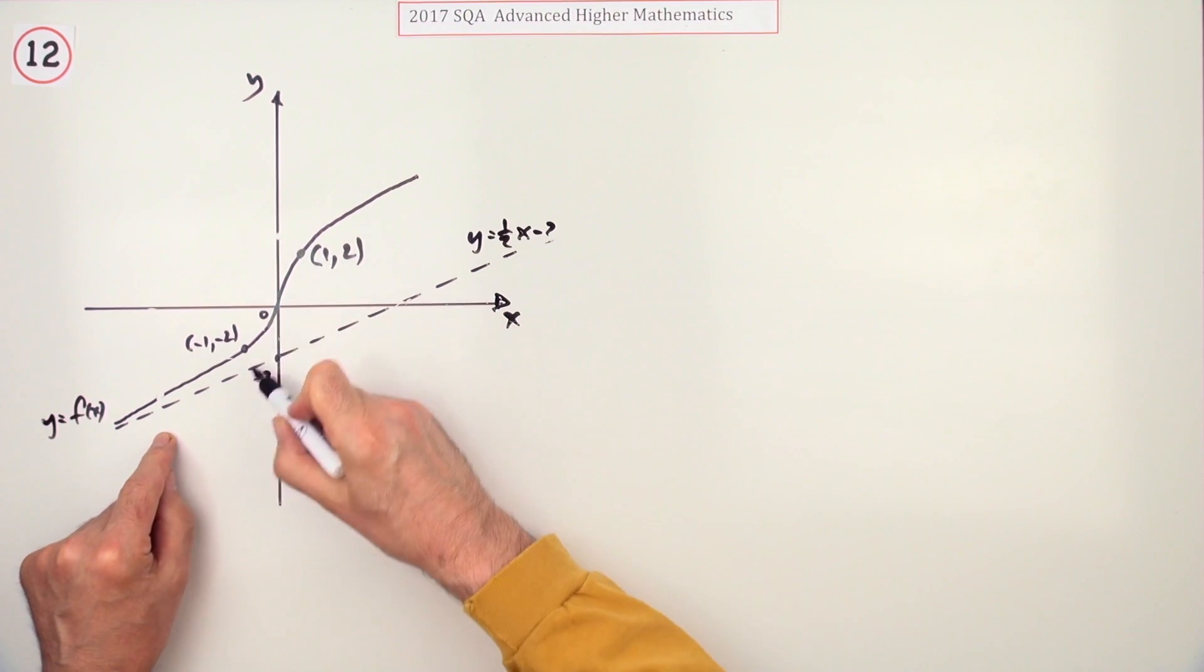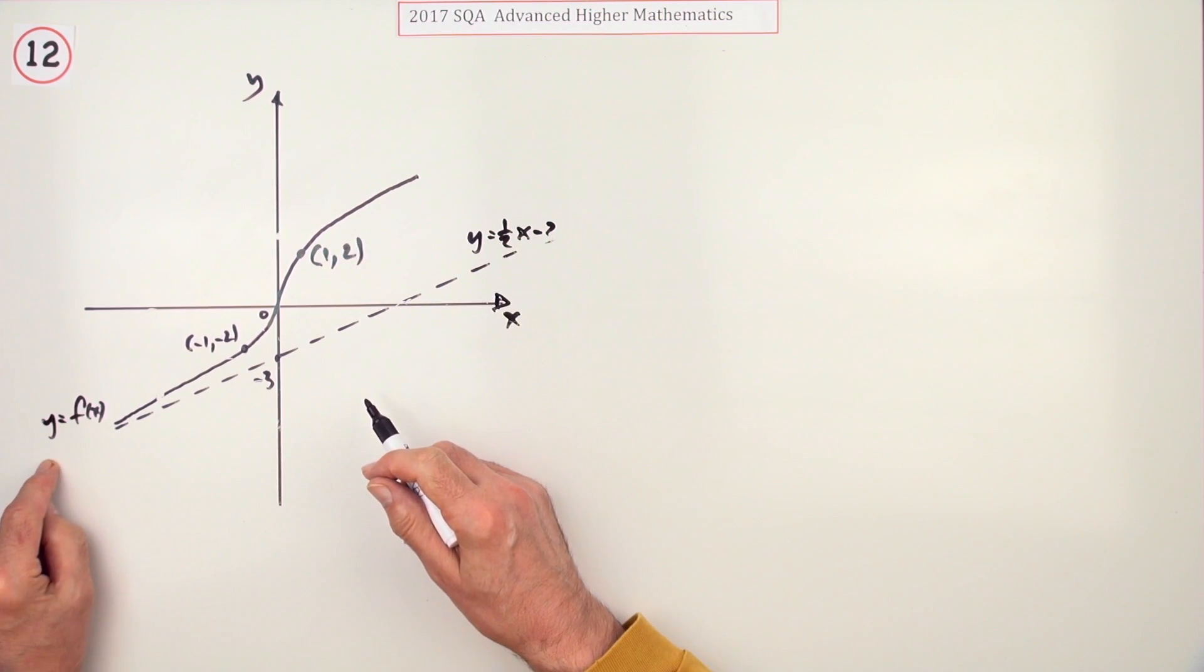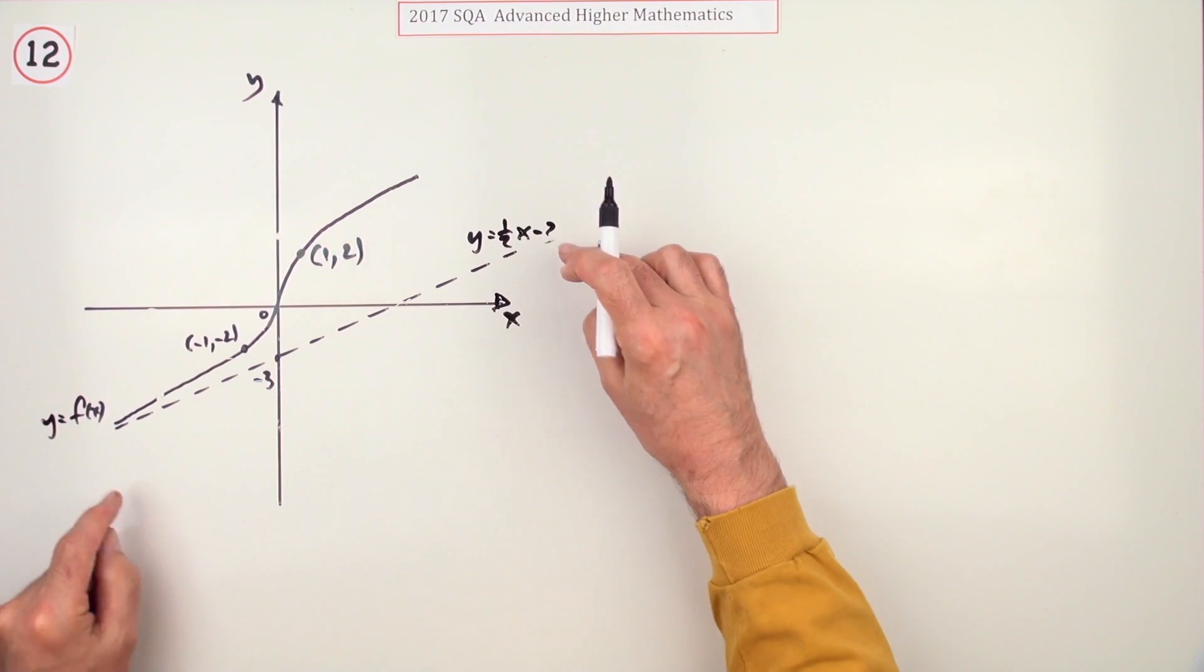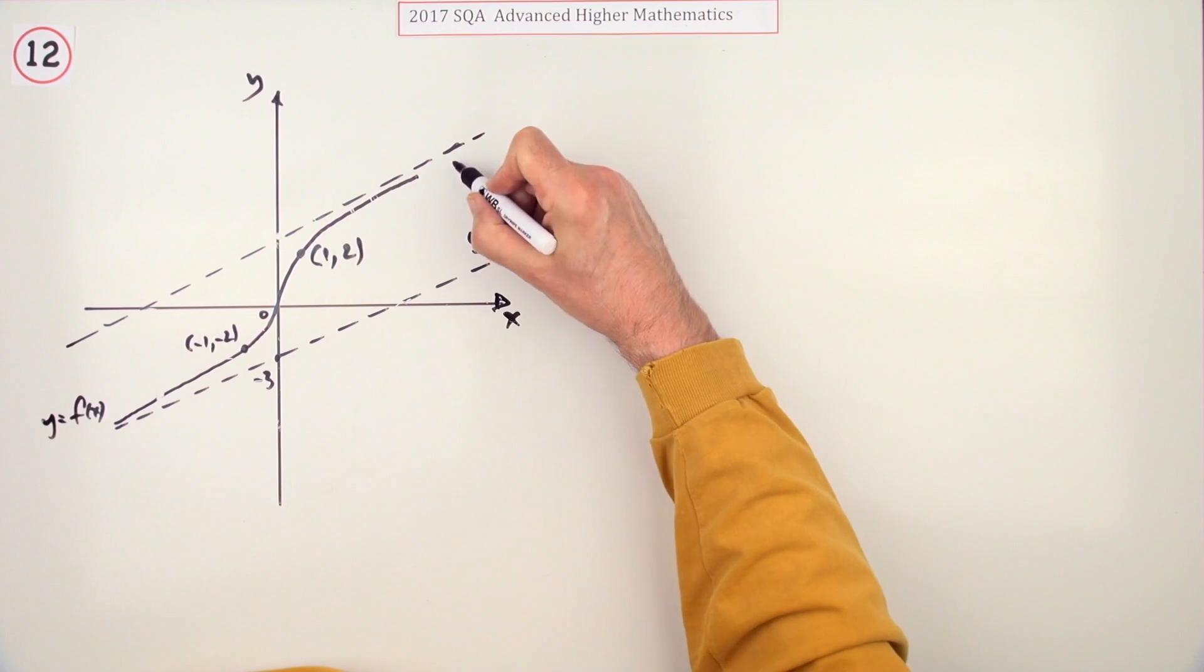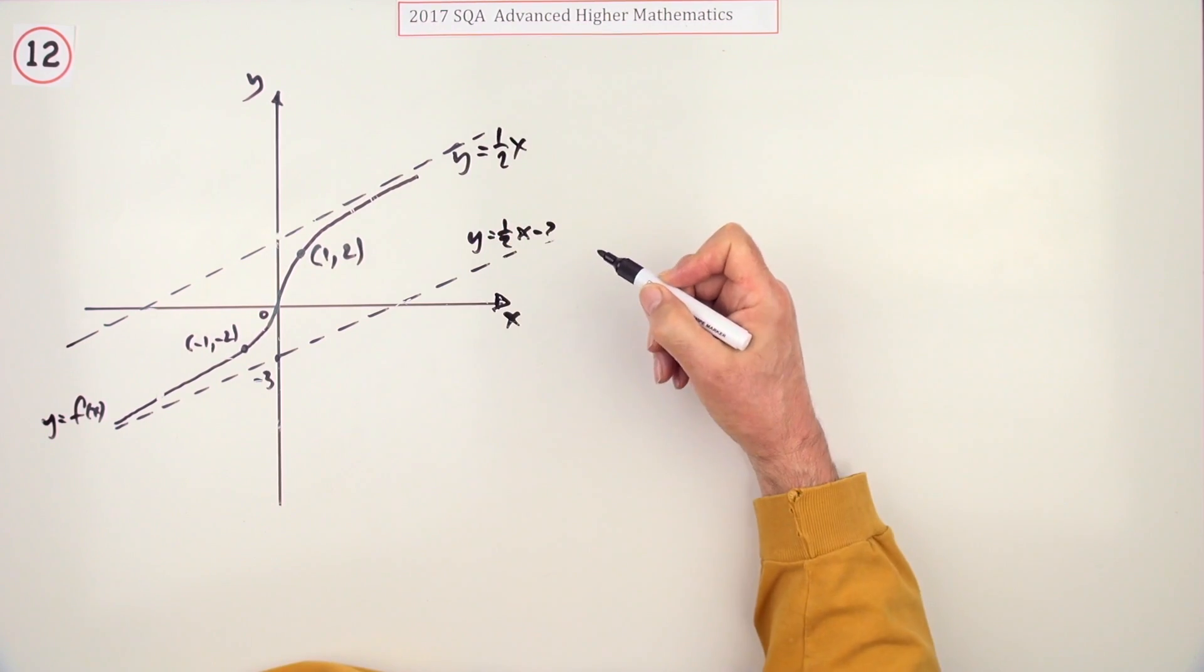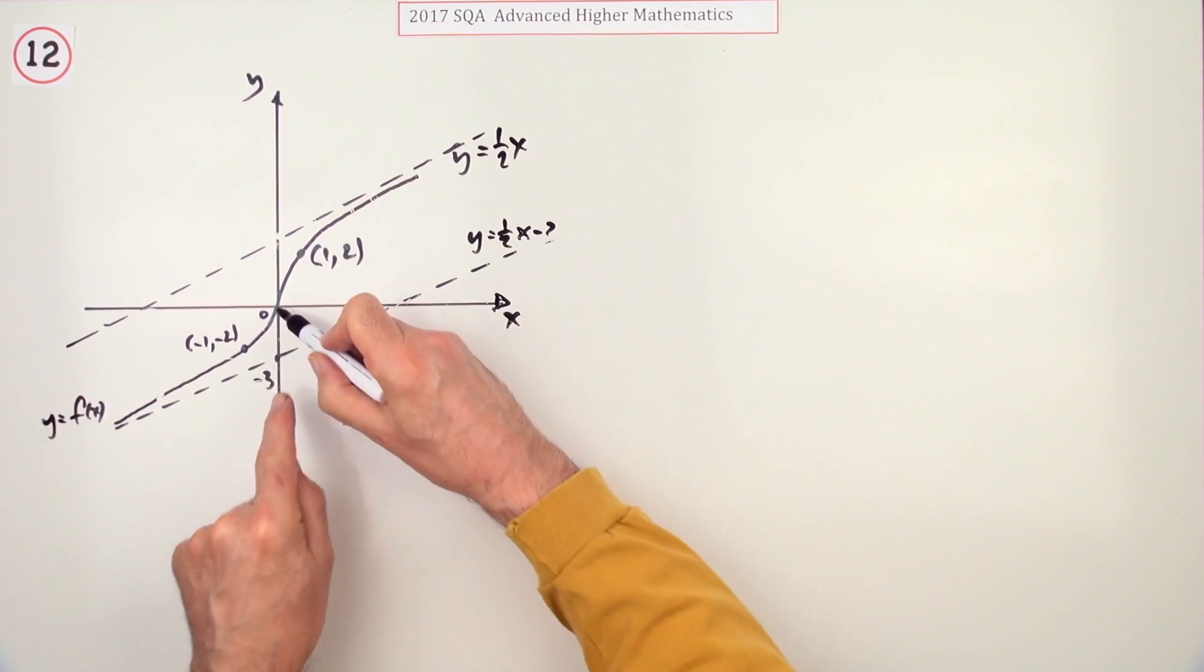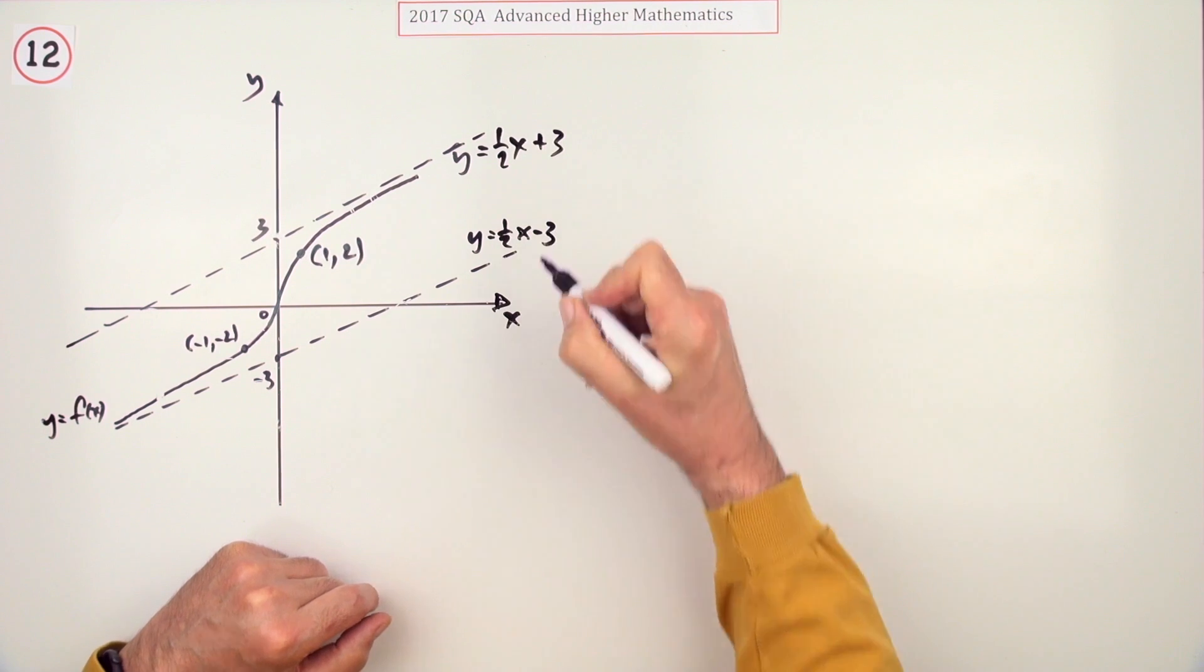There's one more thing: if this curve has an asymptote to this line as x heads towards infinity, then this will also have the asymptote of a parallel line like this. Since it's parallel, it's got the same gradient, and because it's got half-turn symmetry, if that was 3 below, that's now 3 above, so it's y = (1/2)x + 3.